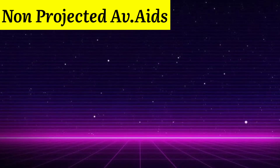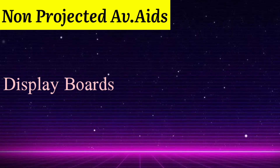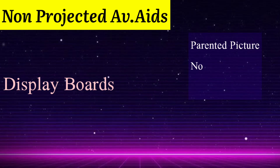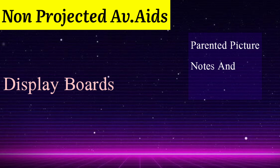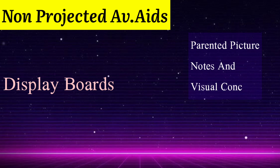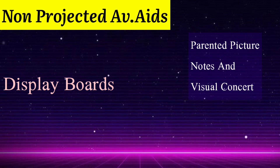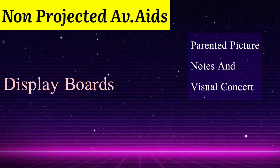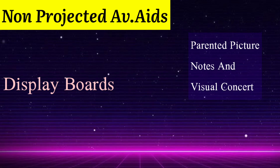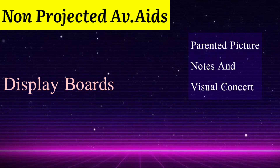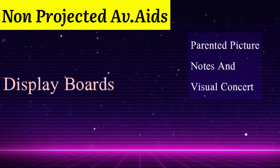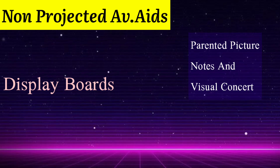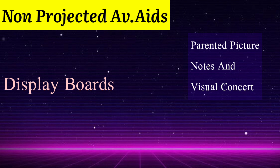The next non-projected AV aid is display boards. Display boards mean the boards that we use inside the class for writing something. We can say these are the whiteboard, blackboard, and green board that we use inside the classroom.